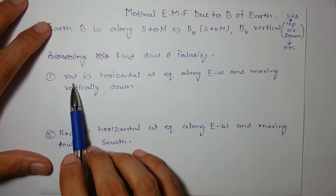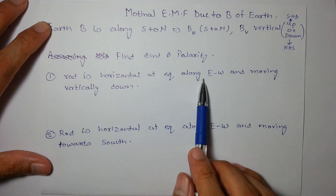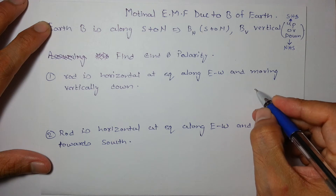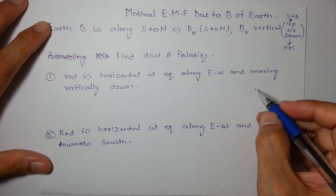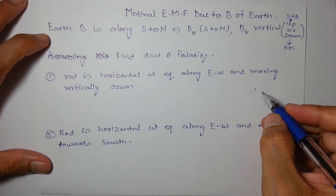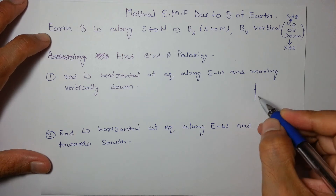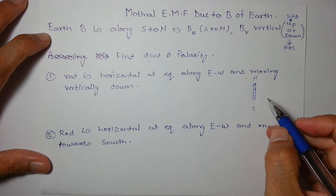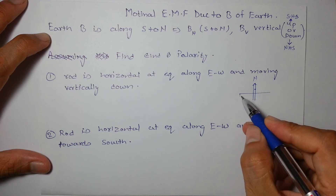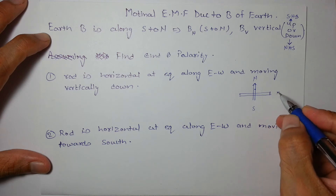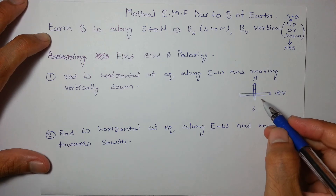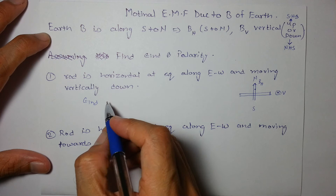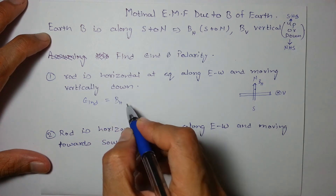Let's say a rod is horizontal at the equator, oriented along the east-west direction, and moving vertically downward. At the equator we have only BH — the horizontal field from south to north. The conductor is horizontal along east-west, and its velocity is downward.